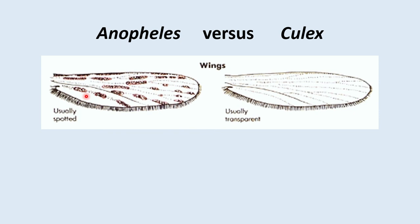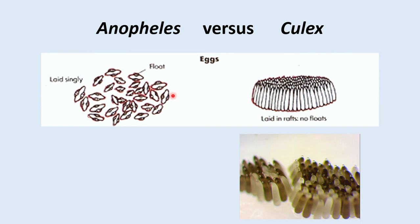Another way to tell adults apart is to look at the palps — part of their mouth parts. Anopheles have long palps on both males and females, while Culex have shorter palps. Wing spots are also present on most Anopheles — created by scales similar to those on butterfly wings — while Culex wings are usually transparent. Anopheles eggs have small floats that help them float individually, whereas Culex egg rafts have no floats per egg but float as a cluster.